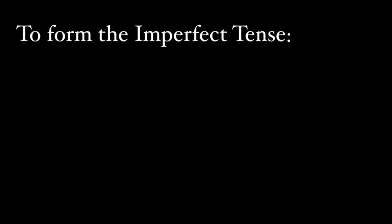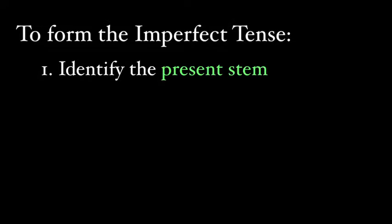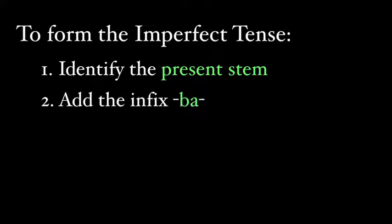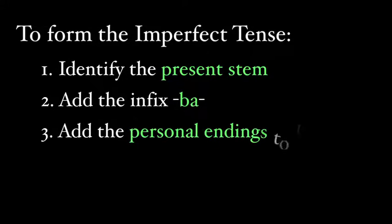Conjugating a verb in the imperfect tense is pretty regular for all conjugations. Generally, you first find the present stem — that's from the second principal part, the present infinitive — and remove the '-re' ending. Onto this, we will place our infix 'ba', and then the personal endings: m, s, t, mus, tis, nt.